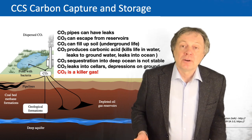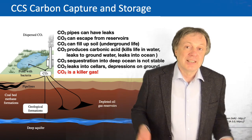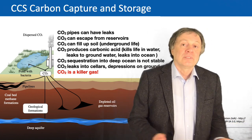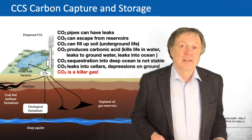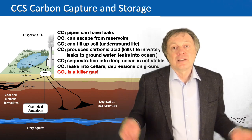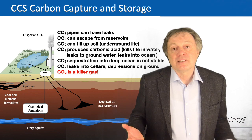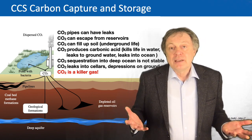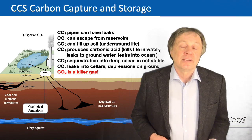If CO2 comes out of the ground it can leak into houses and cellars. CO2 is a very heavy gas — if released, it flows downward into cellars or accumulates in caves and depressions in the landscape. This can lead to much higher concentrations than in normal air, which is dangerous. I always say CO2 is a killer gas, and I will explain why I call it that.